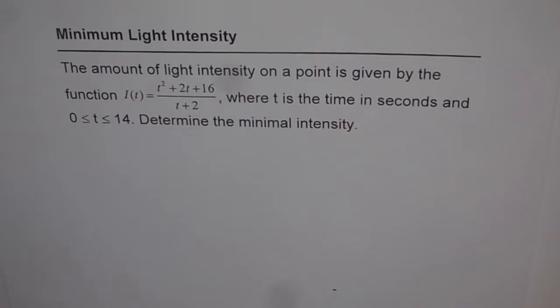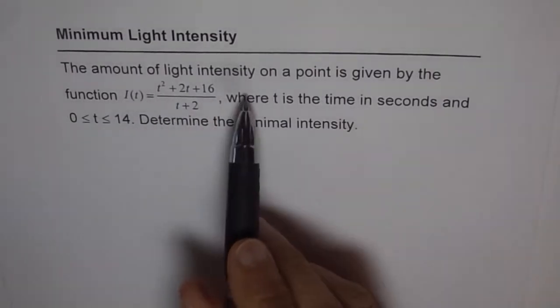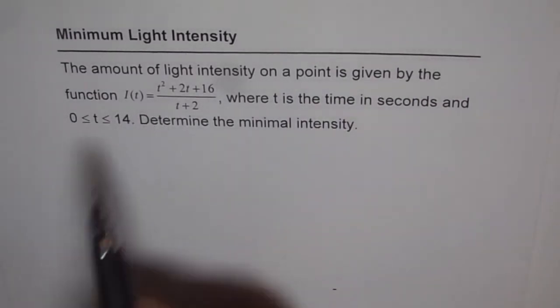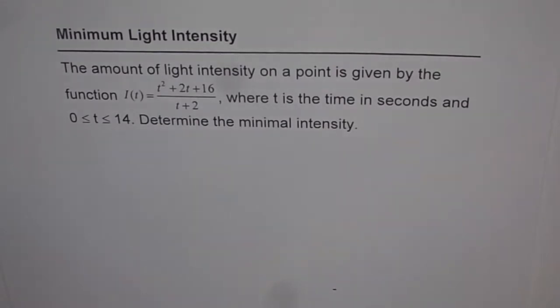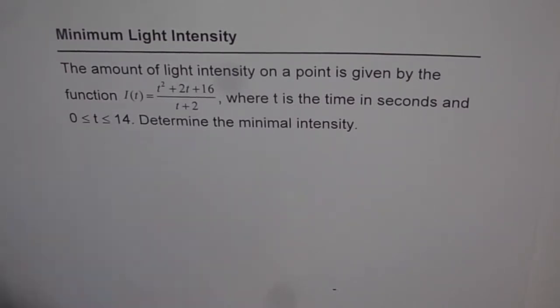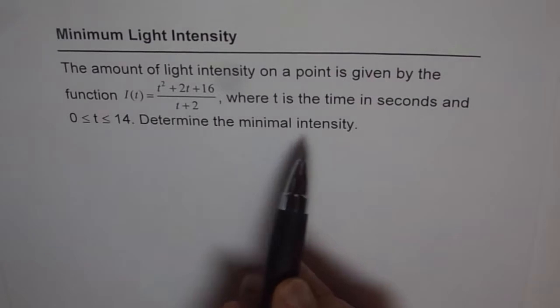This question is on minimum light intensity. The amount of light intensity on a point is given by the function I(t) equals t² + 2t + 16 over t + 2, where t is the time in seconds and t is greater than or equal to 0 but less than or equal to 14. Determine the minimum intensity.